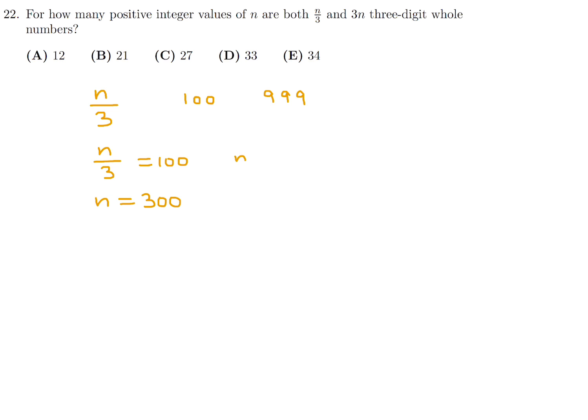If n over 3 is equal to 999, then that means n is equal to 2997. Okay. So this is my range for n so far.